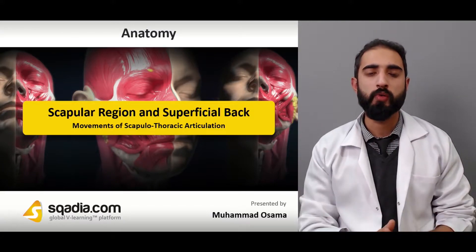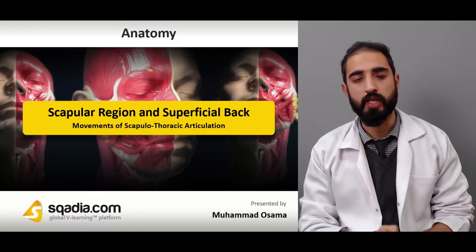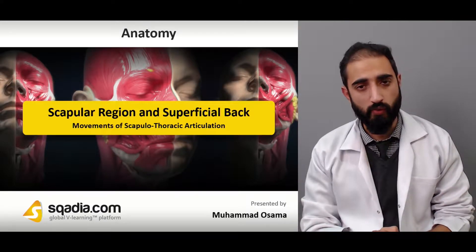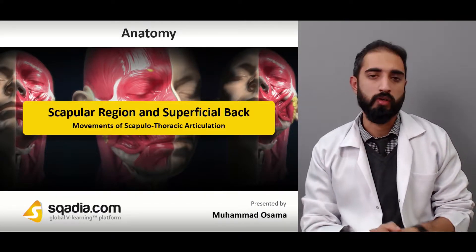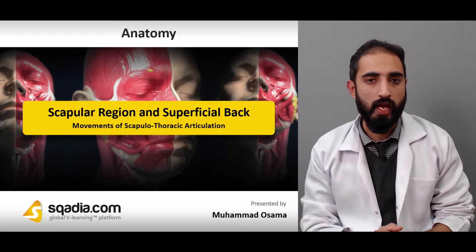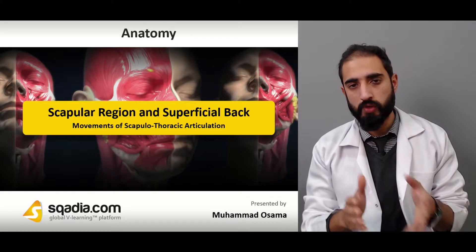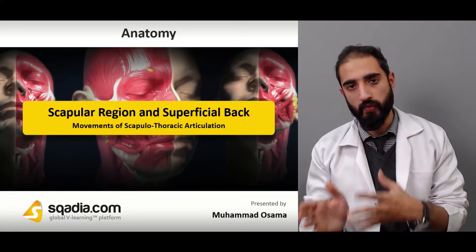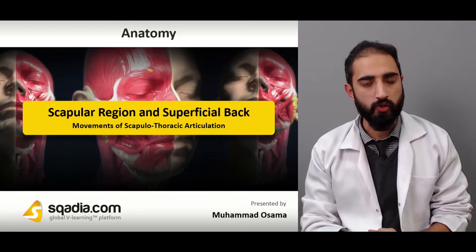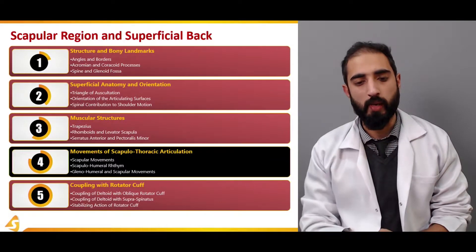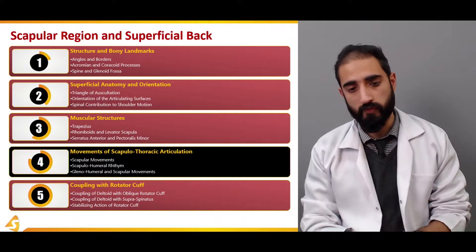We are talking about the scapular region and superficial back. As we know, the scapulothoracic articulation is a functional joint, yet there is movement in different directions, which occurs by different muscles. Now that we know the muscles and their actions, let's take a look at those movements which are actually available at the scapulothoracic articulation.